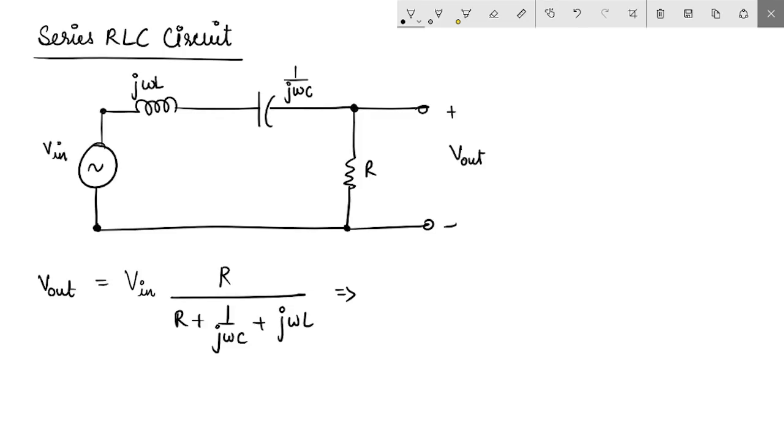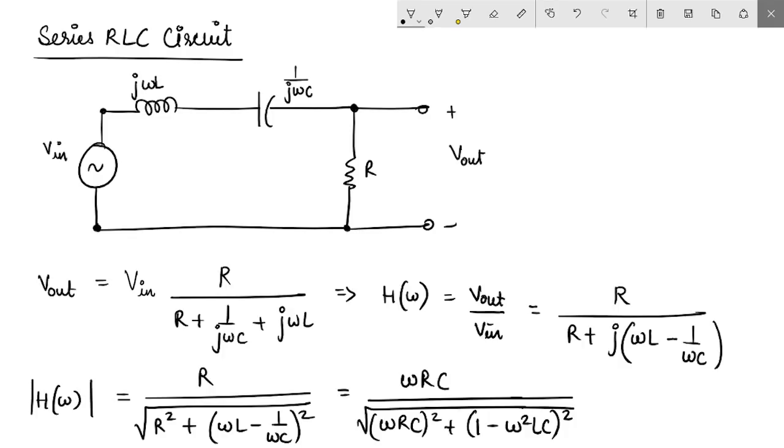In other words, we can write the transfer function H(ω), which is V_out upon V_in, in this case as R upon R plus, if I take j out, I can say ωL minus 1 upon ωC. Simplifying this, I can write the magnitude of this transfer function H(ω) would come out to be this. This is the gain magnitude.